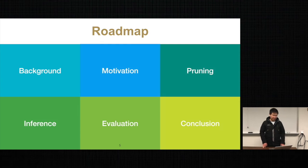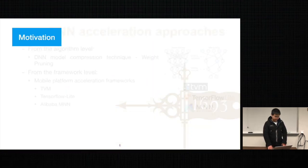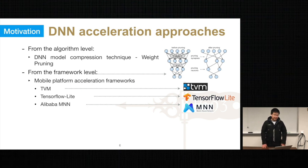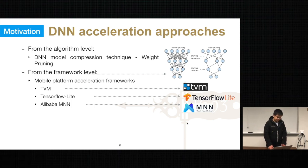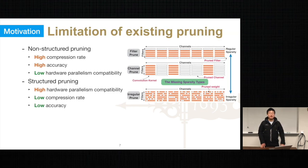Now let's move to the motivation part. There are several DNN acceleration approaches. For the algorithm level, one of the most innovative techniques is DNN model compression. It can result in significant reduction in model size, and computation is also reduced with the reduction of the weights. From the framework level, there are also several end-to-end DNN acceleration frameworks targeting mobile platforms — for example, TVM, TensorFlow Lite, and Alibaba MNN. However, these approaches still have some limitations.